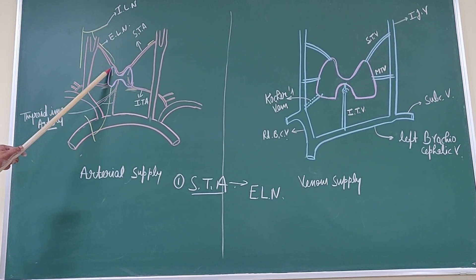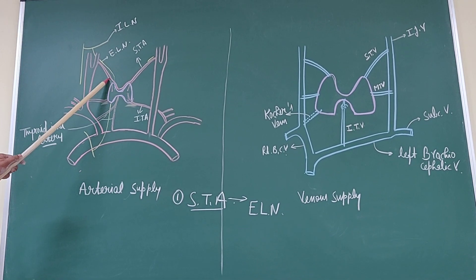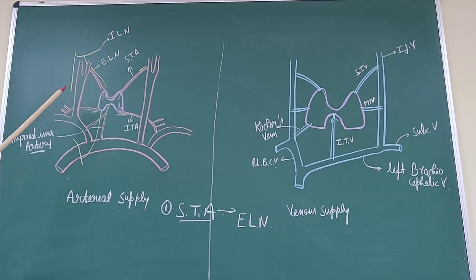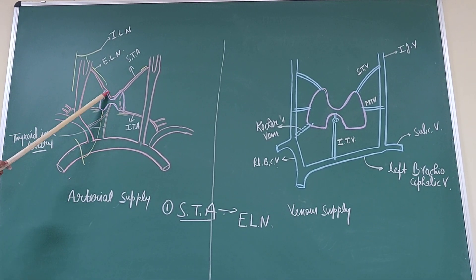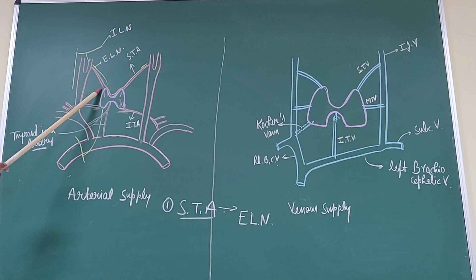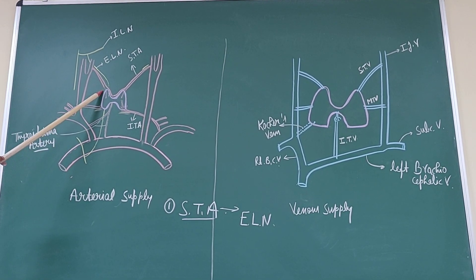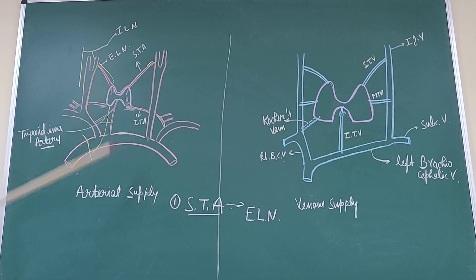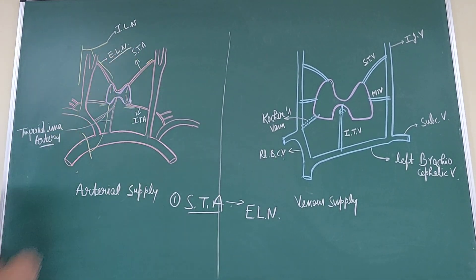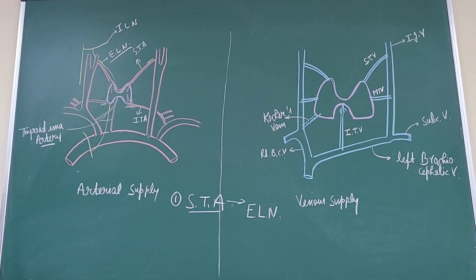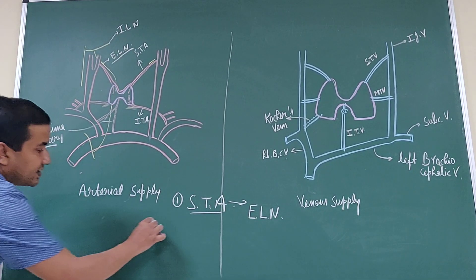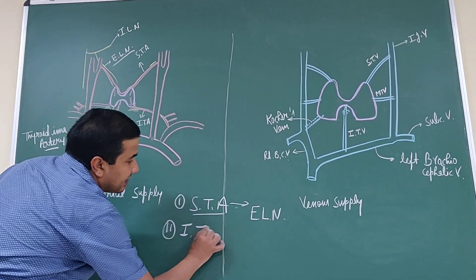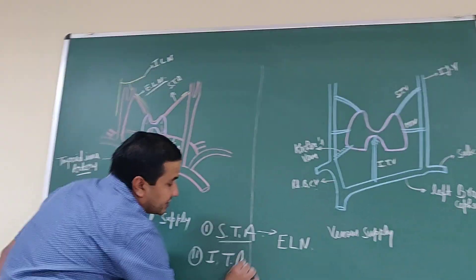To ligate the superior thyroid artery, it is best to ligate near the thyroid gland to avoid injury to the external laryngeal nerve. The second artery is the inferior thyroid artery.